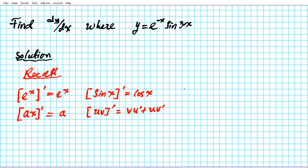We also have the chain rule, which is used for differentiating the composite function f of g of x. When we differentiate that, we get the derivative of the outer function f prime evaluated at the inner function, times the derivative of the inner function.